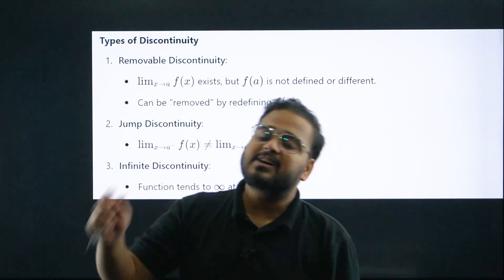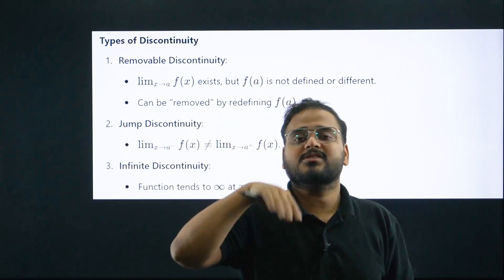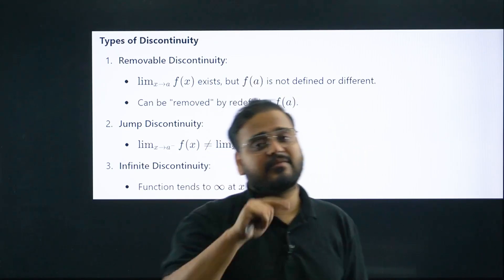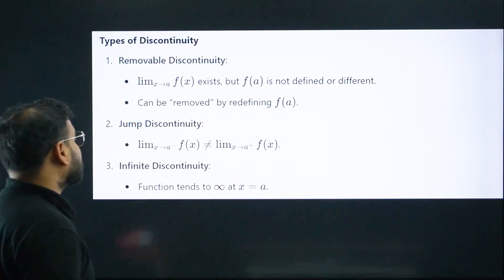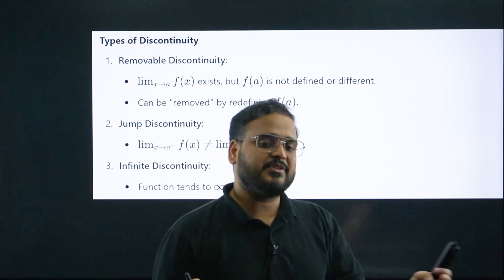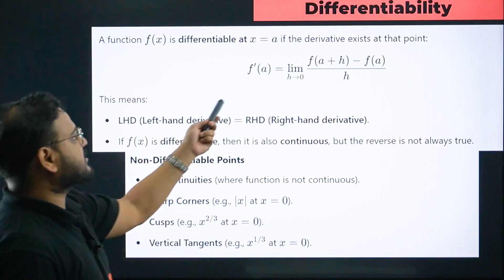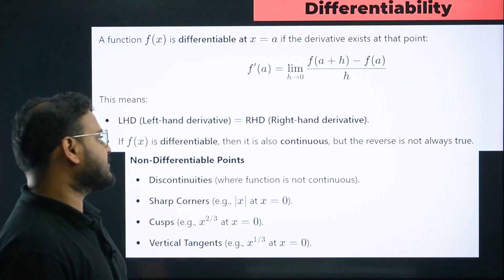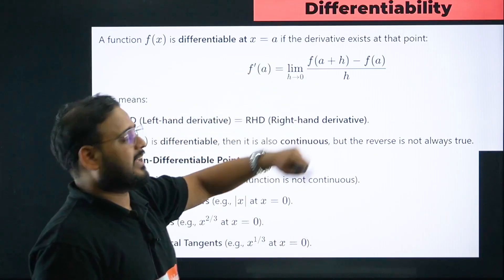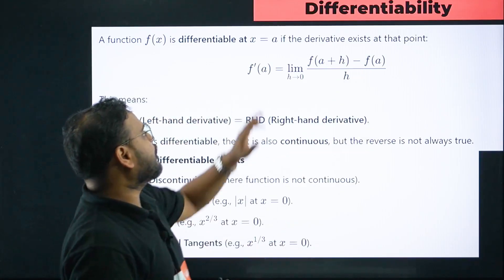For differentiability, you check for sharp corners or use the algebraic approach — find LHD and RHD. First, redefine the function at the critical point, then find the derivative from both sides: left-hand derivative and right-hand derivative. If they're equal, the function is differentiable; otherwise it's non-differentiable. Also, the first principle of derivative is: f'(a) = lim(h→0) [f(a+h) − f(a)] / h.